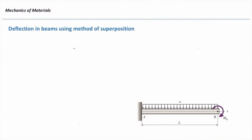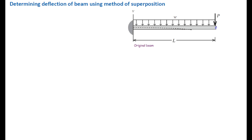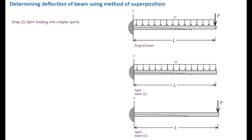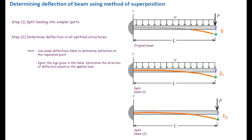In the previous lecture, we learned how to calculate deflection of a beam at a certain point using the principle of superposition. In this method, we basically do three main steps. In the first step, we split the loading of the structure into simpler parts — parts for which we can find the deflection in the table. In the second step, we determine the deflection caused by each loading at the required point.